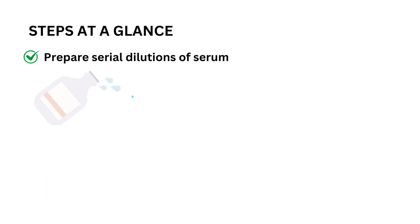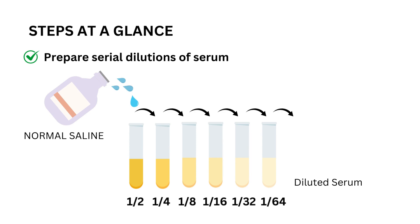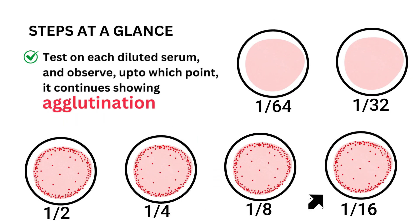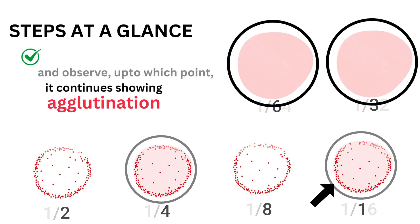The idea is we will dilute the serum serially in different concentration by adding saline preparation and test each of those diluted serum. We will observe up to which point the agglutination is being positive. That point will be the highest dilution of the serum at which the agglutination occurs.